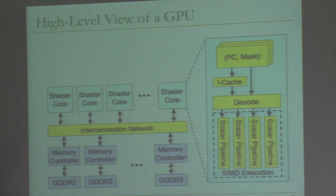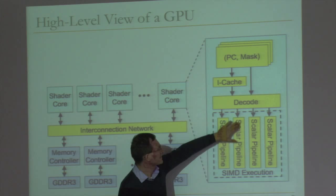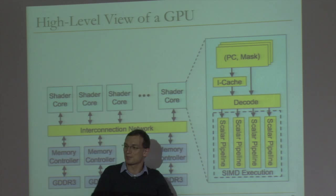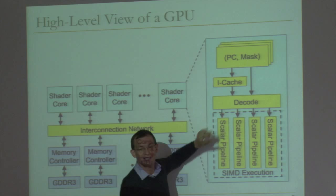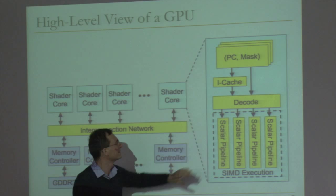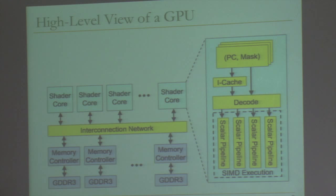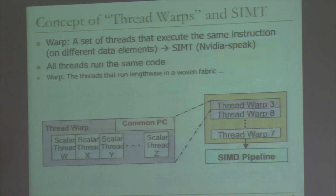The general purpose core looks like a SIMD engine: you have an instruction cache, a decode unit, and a bunch of scalar pipelines that, in the same cycle, execute the same instruction. That's how SIMD or SIMT is accomplished — the same thread executes in the same cycle on these different scalar pipelines, but on different data elements. The programmer writes a single thread, and that thread executes on different data elements on these different scalar pipelines.